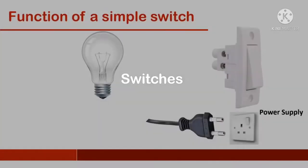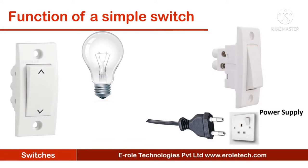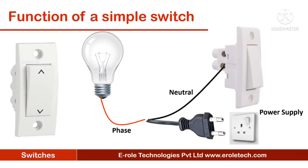Switches are used to turn electronic appliances on or off. We can see this simple on/off switch in our house. The electricity coming into our home has two terminals: phase and neutral. To control an electrical appliance using a switch, we connect one electrical wire directly to the appliance and the other wire to the appliance through the switch.